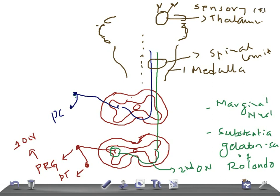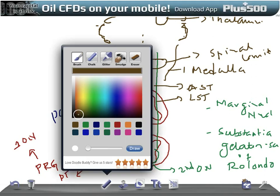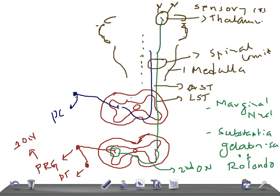The fibers of the lateral spinothalamic tract form a spinal lemniscus along with the fibers of the anterior spinothalamic tract at the lower part of the medulla. The anterior spinothalamic tract and the lateral spinothalamic tract travel together. The fibers from the lateral spinothalamic tract terminate in the ventral posterior lateral nucleus of the thalamus, along with the anterior spinothalamic tract.